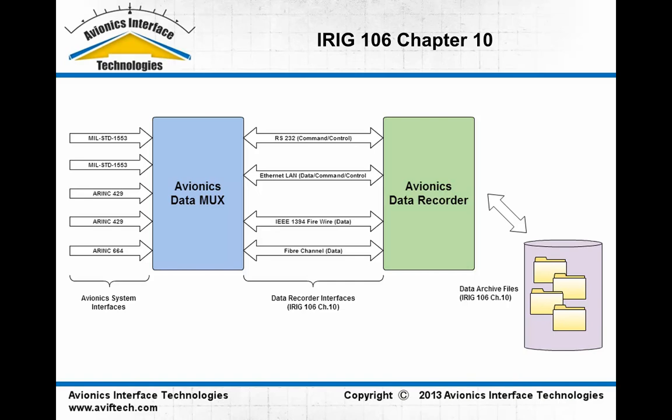Here's a diagram to summarize the interfaces covered in the Chapter 10 document. On the left side of the slide, we show some of the different avionics data buses covered in the spec. The spec provides a listing of the data buses that onboard flight recorders should be capable of capturing data from, and also provides details on how to encode that captured data. This includes multiple MIL Standard 1553 buses, multiple ARINC 429 serial channels, and avionics Ethernet or ARINC 664 — an AFDX type of avionics data bus network interface.